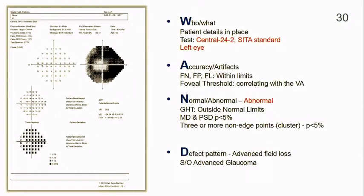The next report is a left eye report using SITA Standard 24-2. Reliability indices are well within acceptable limits, and foveal threshold correlates well with visual acuity. GHT says it is outside normal limits. The total deviation plot shows severely depressed fields, and in such cases HFA does not project the pattern deviation plot. This is probably suggestive of advanced glaucoma — and again, clinical correlation with other signs is essential.